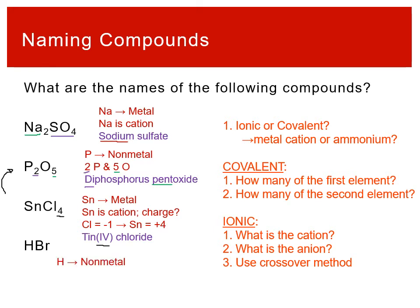HBr — H is a non-metal. It's over in that first column, but it is the exception over there — it's a non-metal. So this is 1H and 1Br. No prefixes required. Hydrogen bromide.